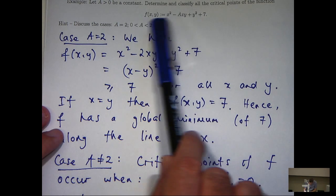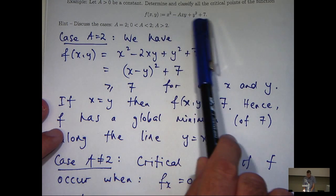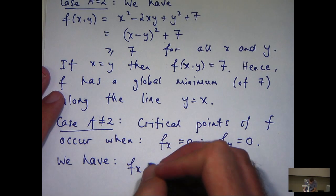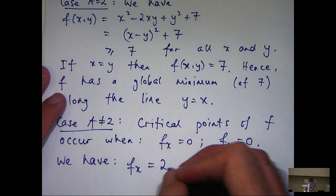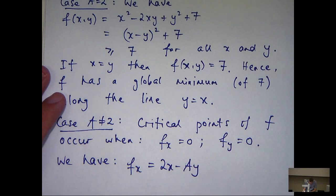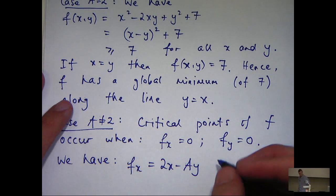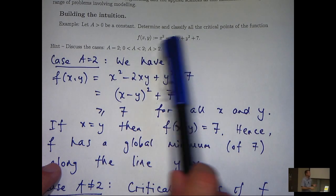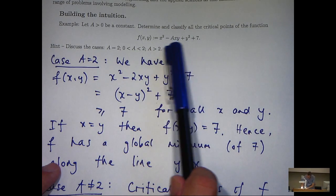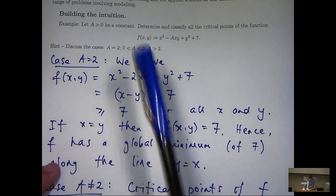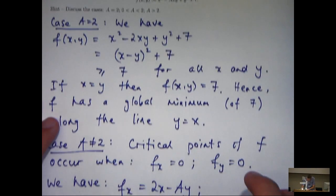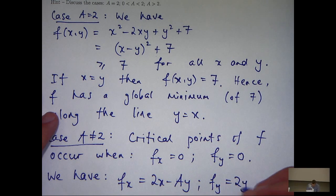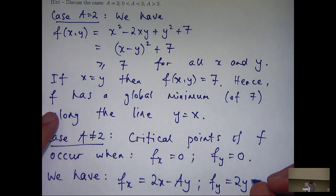To calculate df dx, we imagine all the y's a constant and differentiate normally with respect to x. In this case, we're going to get the following. Remember, a is a constant. And to calculate df dy, we imagine all the x's a constant and differentiate normally with respect to y, remembering again that a is a constant. I'm going to get something like this.